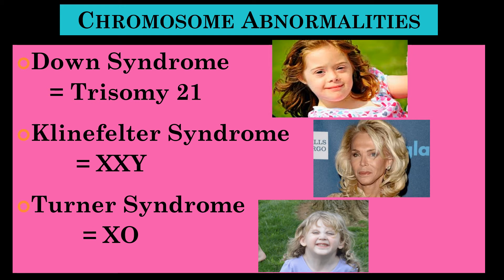The third example of a chromosome abnormality is called Turner syndrome. Turner syndrome only happens to girls because this is a case where a chromosome is missing. In Turner syndrome, the girl only has 45 chromosomes instead of 46, represented as X zero — what's missing is a sex chromosome. This person only has one X chromosome and will be very feminine because they have very low levels of testosterone. They also have certain physical symptoms.